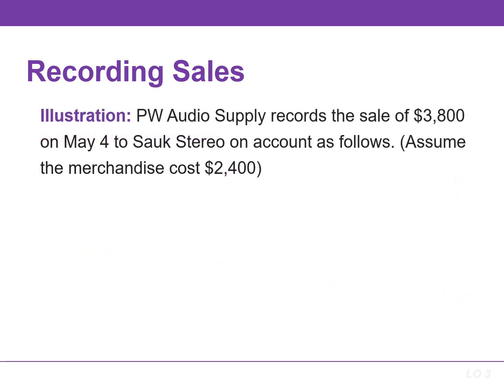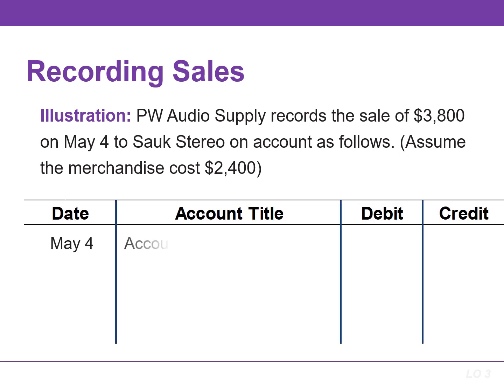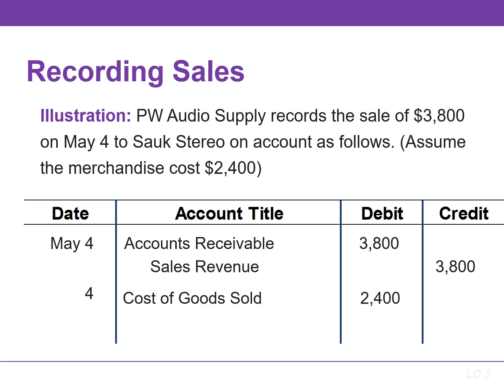To illustrate a credit sales transaction, PW Audio Supply records the sale of $3,800 on May 4th by debiting accounts receivable and crediting sales revenue for $3,800. They will also increase or debit cost of goods sold and decrease or credit inventory for the cost of those goods. In this example, we assume the merchandise cost $2,400.